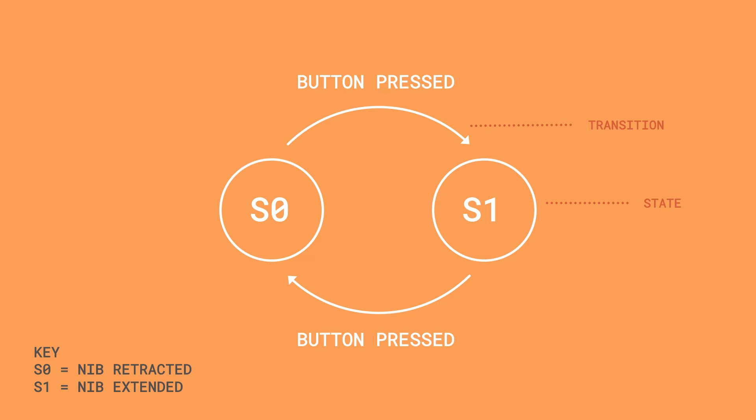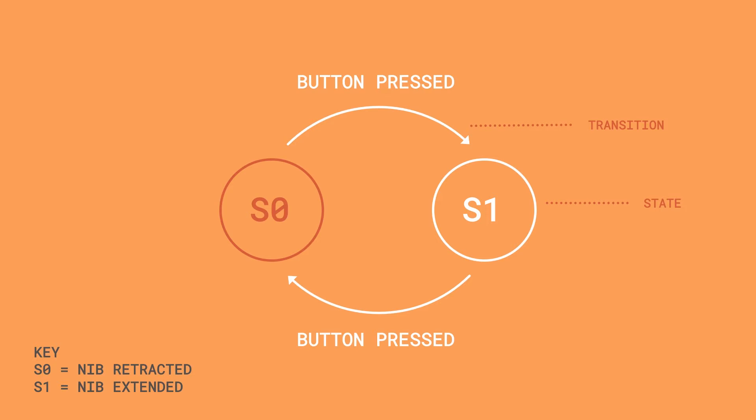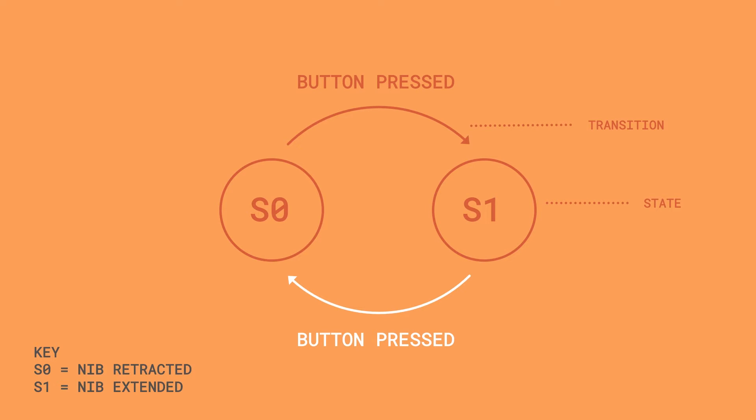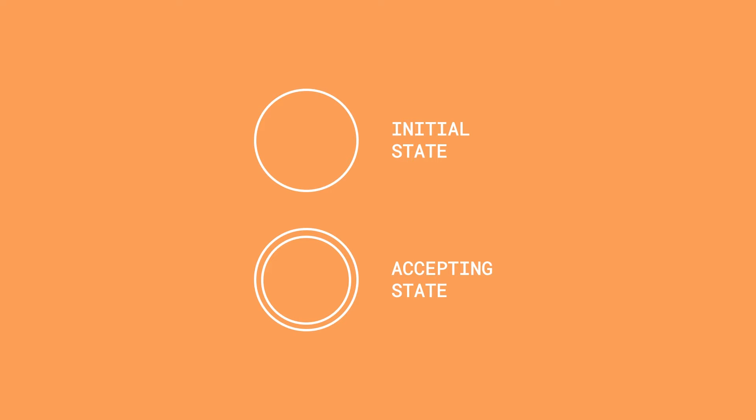Just like we looked at, when the pen's current state is retracted at S0 and you press the button, the pen transitions to a state where the nib is extended at S1. Here are two other symbols you need to know. The initial state is where the machine starts from and resets to. Naturally, you can only have one initial state. A double circle represents an accepting state. You might also hear it called the goal state, and it's the state which shows whether an input is acceptable. You can have more than one accepting state.